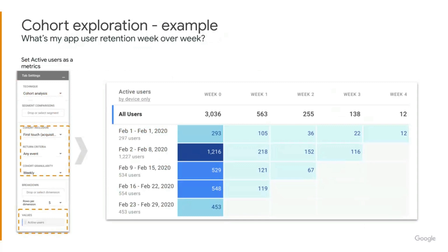Next, we have the cohort exploration. This does appear in the Google Analytics for Firebase user interface in some form, but in the Google Analytics for Properties user interface, this report allows you to do so much more. You can slice and dice what you have here, change the metrics and dimensions that you're interested in, and go a whole lot deeper.